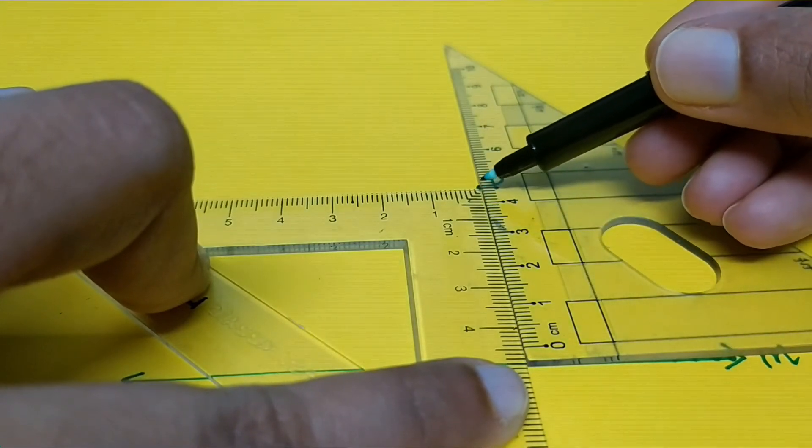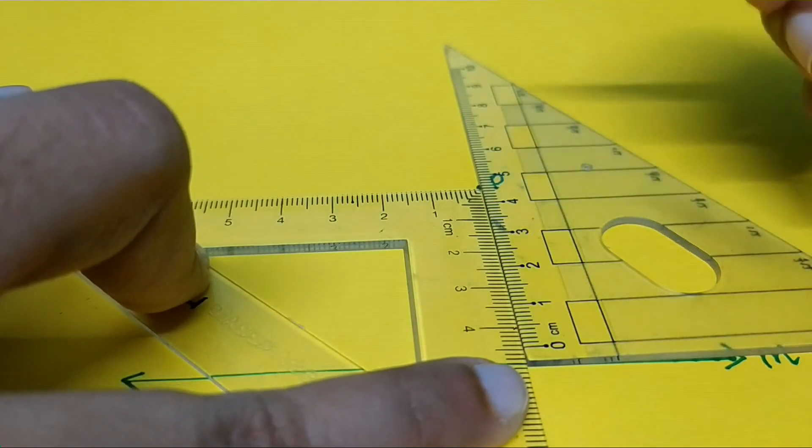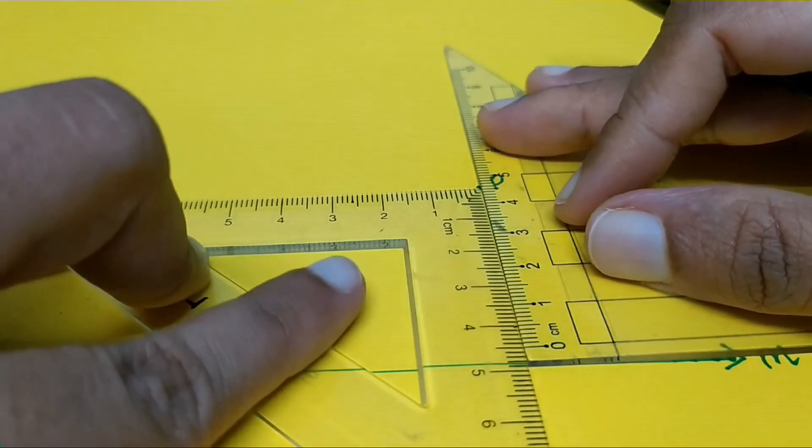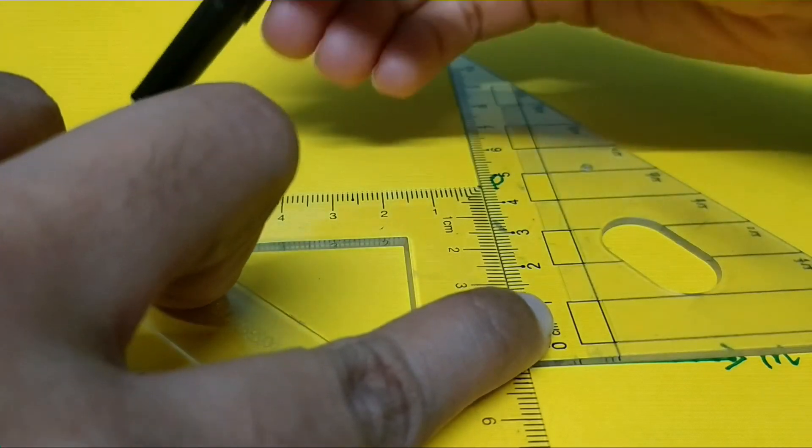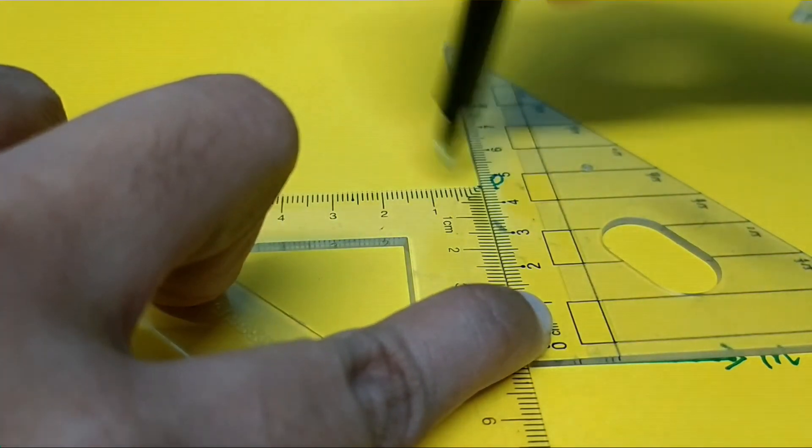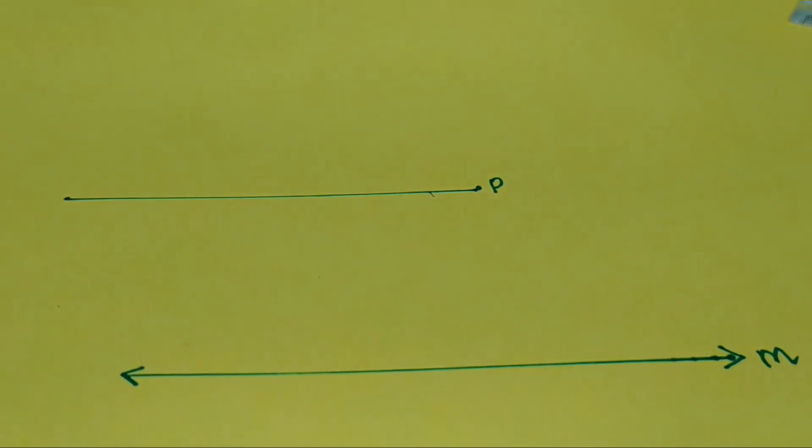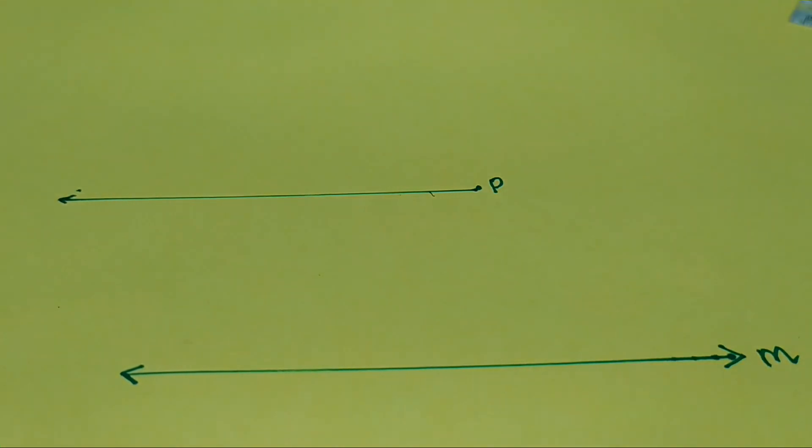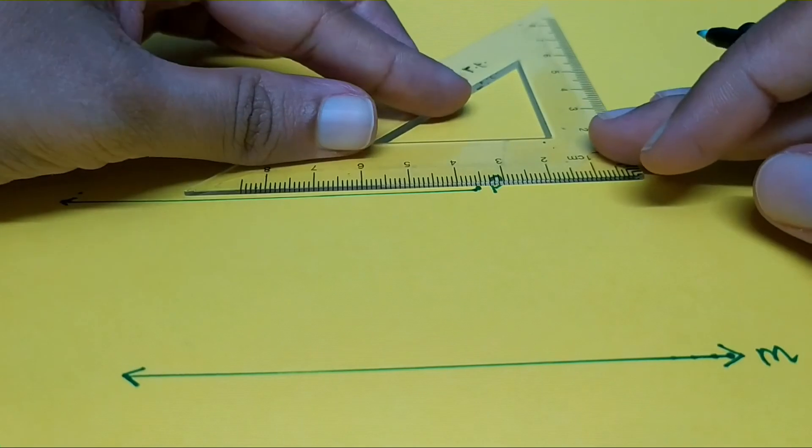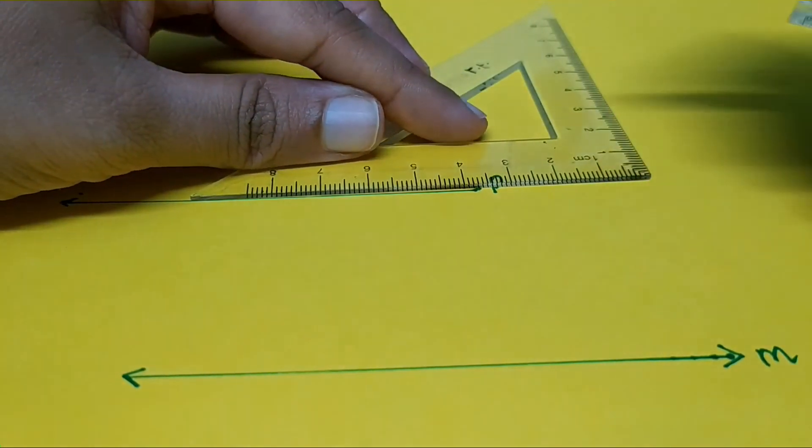You can continue that line. Name that as line n. You can say then that line n is parallel to line m.